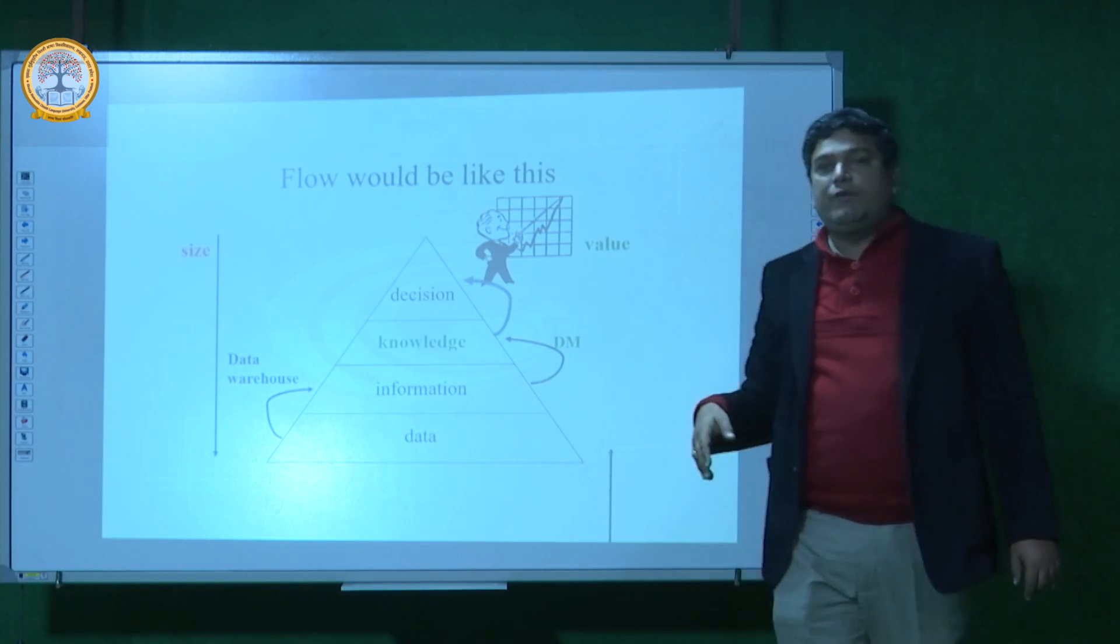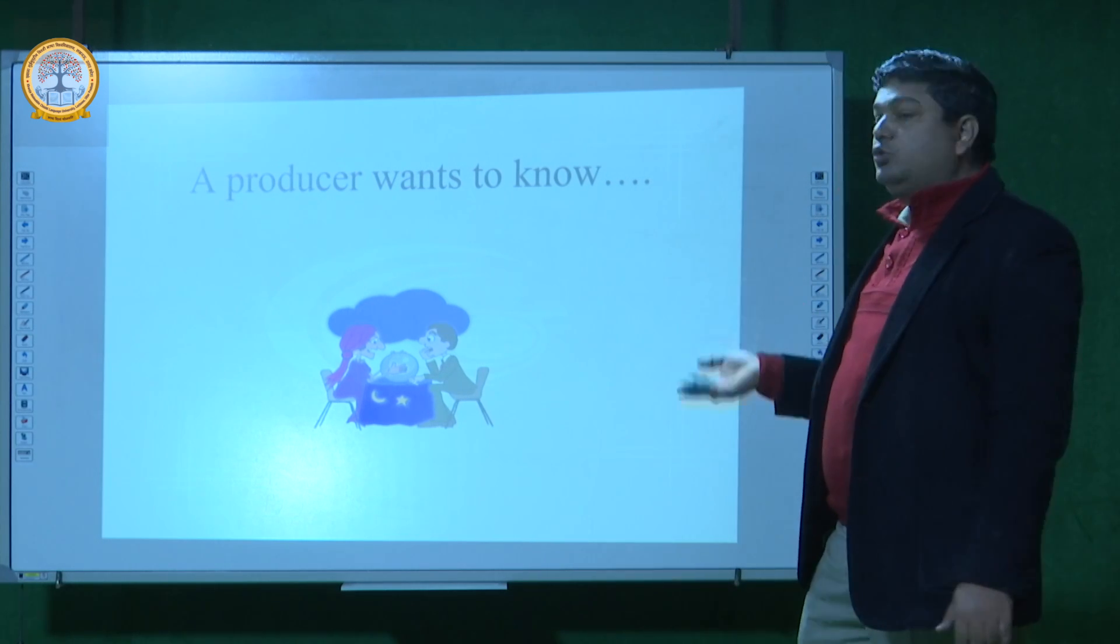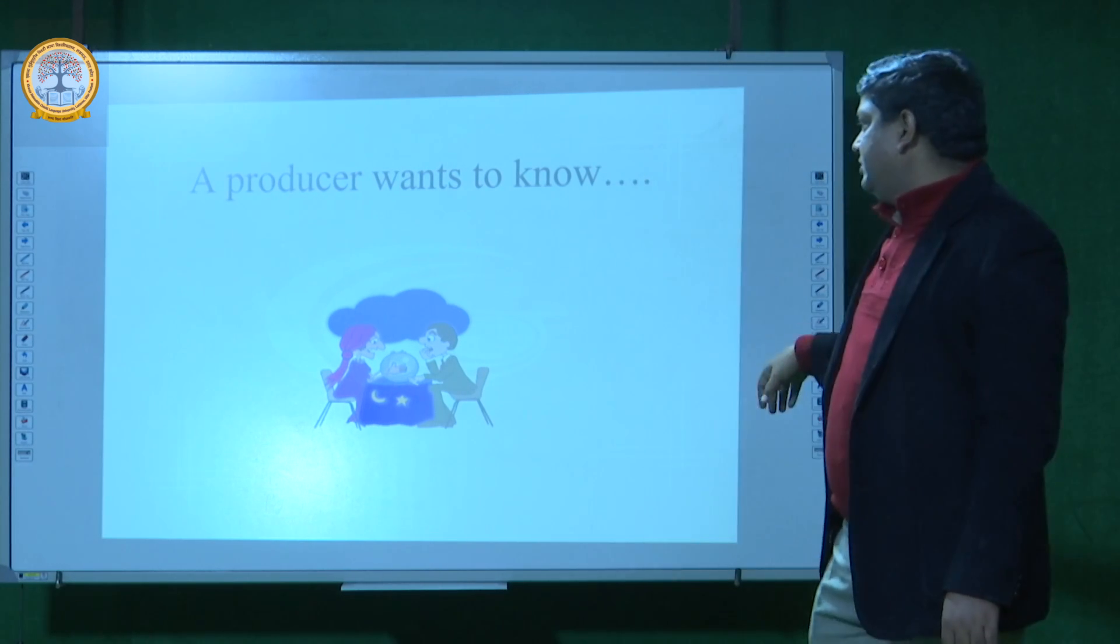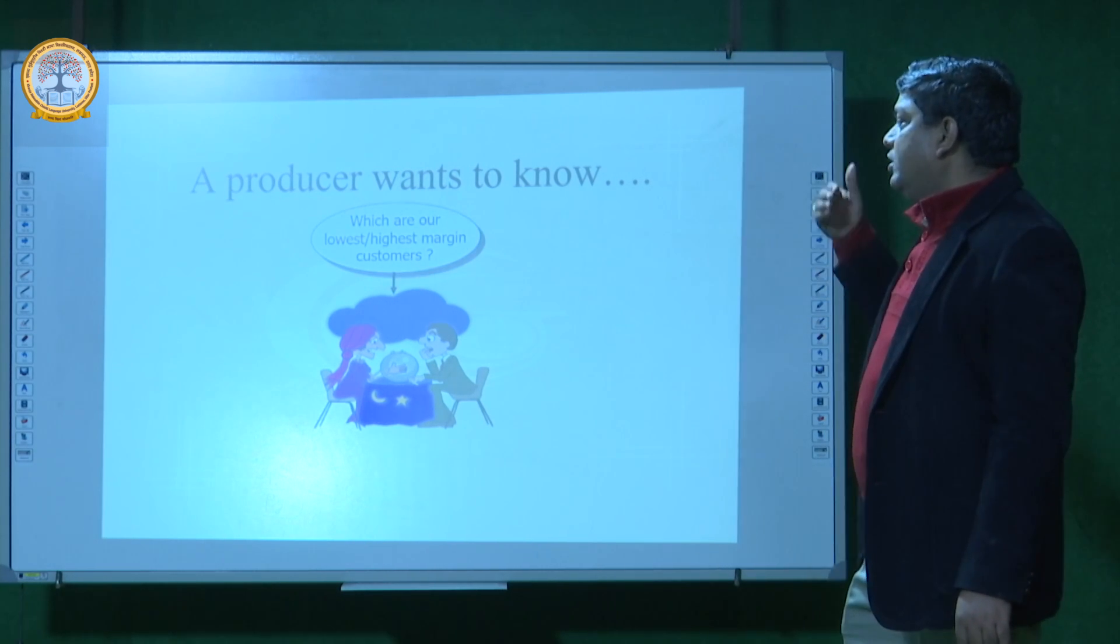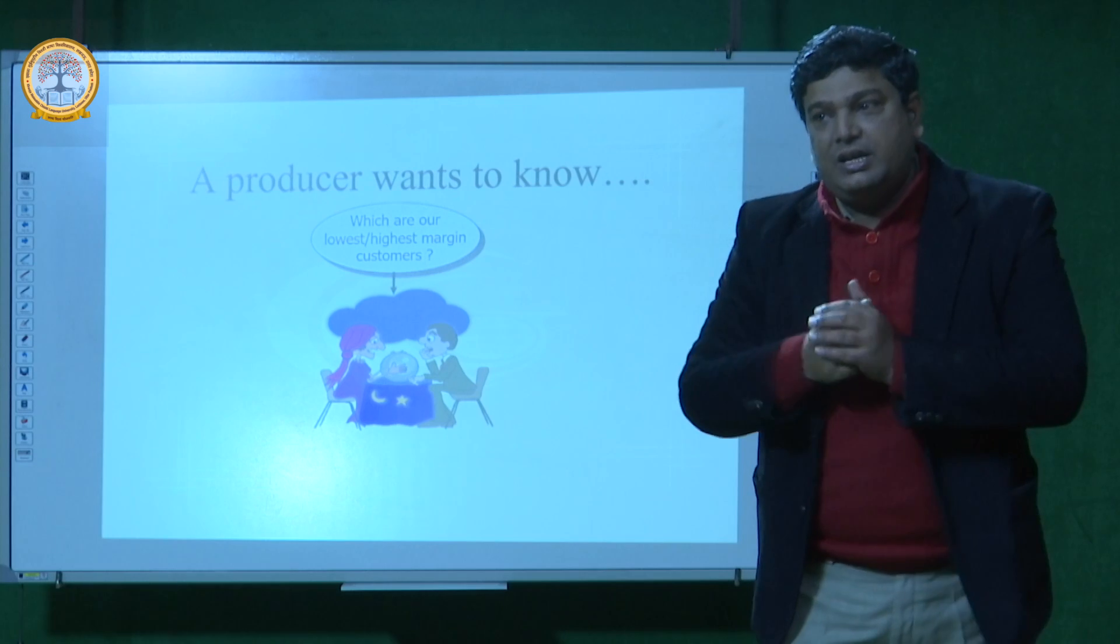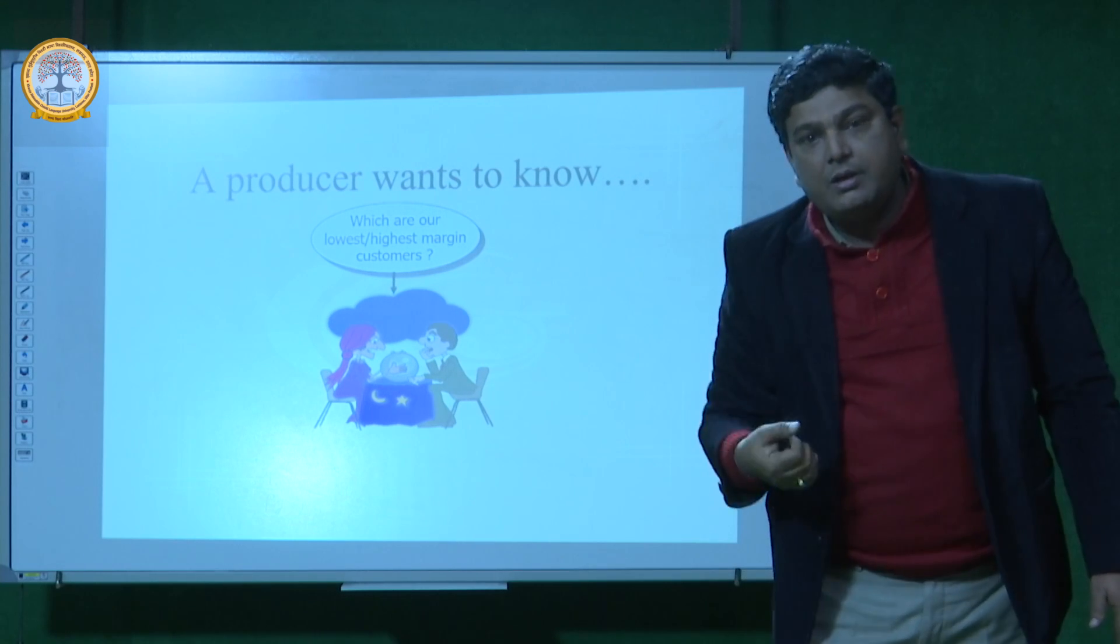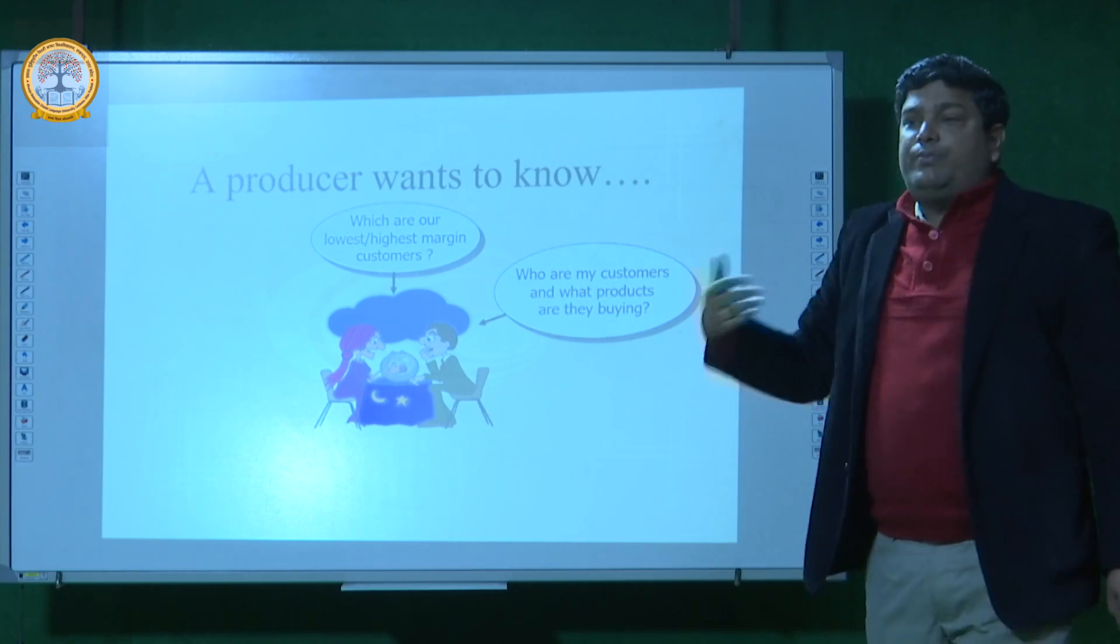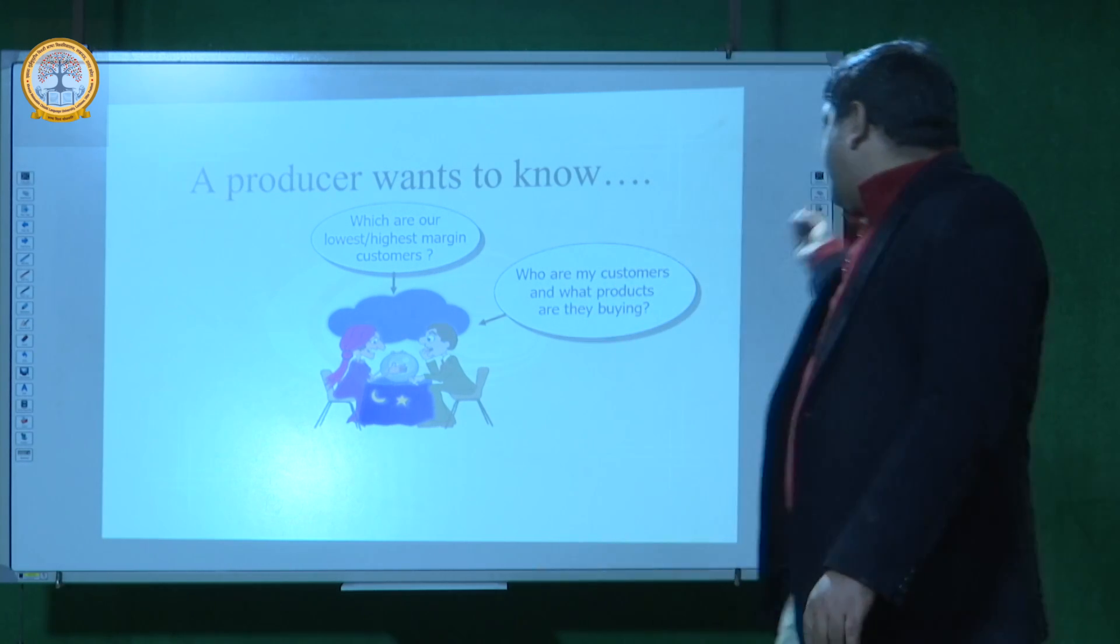If producer wants to know, different areas producer wants. First: which are our lowest, highest margin customers? Related to customers, which products come to the highest margin or lowest margins. Next point: who are the customers buying my products? That is the second point. Third point: what is the most effective distribution channel related to my products?